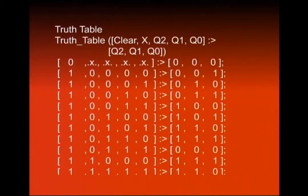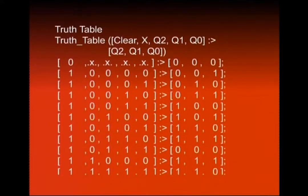Jab clear 1 ho gaya, normal counter operate karega. Second row: clear=1, X=0, Q2=0, Q1=0, Q0=0 — up count karna chahiye, output 001 dikhaya gaya. Agli statement mein clear=1, initial state 001, X=0 — output increment hokar 010 pe. Is truth table mein assignment statement colon aur greater-than sign se hoti hai. Aakhri 8 statements mein X ko 1 kar diya — down count. Clear=1, X=1, initial count=000 — next state 111 hogi. Phir 111 se 110 — down count. Is tarah yeh truth table completely 3-bit up/down counter ko represent kar raha hai.